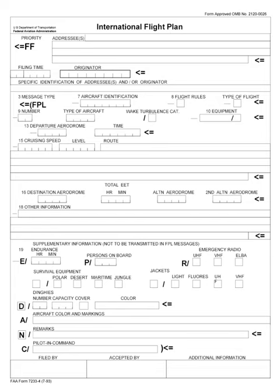Flight plans are documents filed by a pilot or flight dispatcher with the local Civil Aviation Authority prior to departure, which indicate the plane's planned route or flight path. Flight plan format is specified in ICAO DOC 4444. They generally include basic information such as departure and arrival points, estimated time en route, alternate airports in case of bad weather, type of flight whether IFR or VFR, the pilot's information, number of people on board, and information about the aircraft itself.